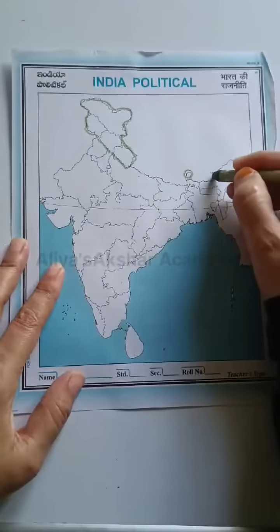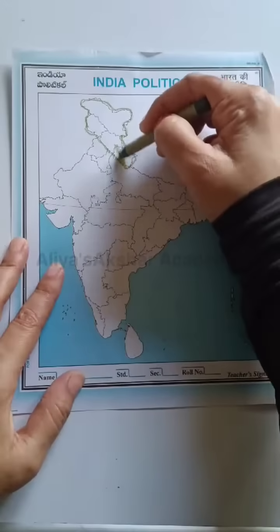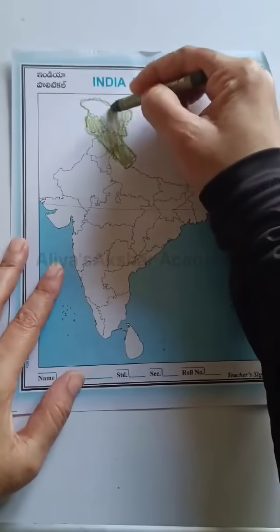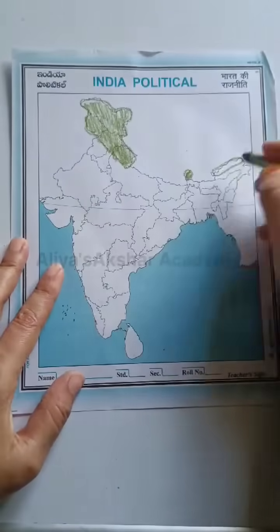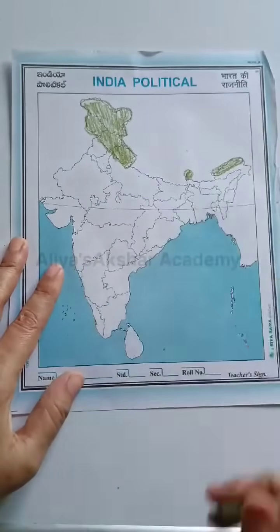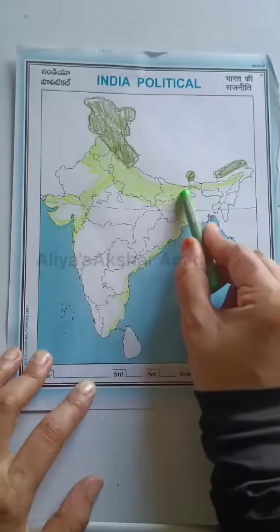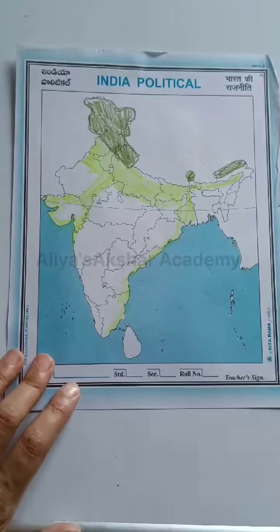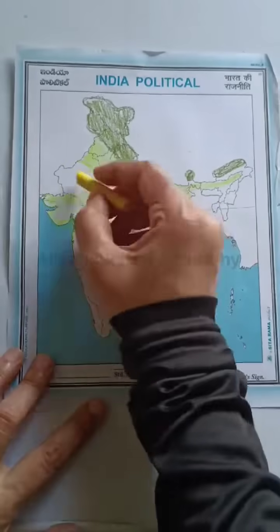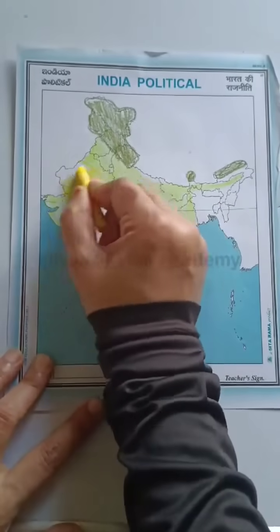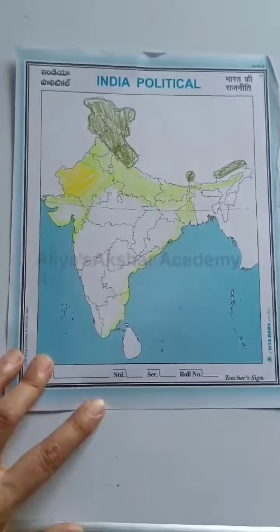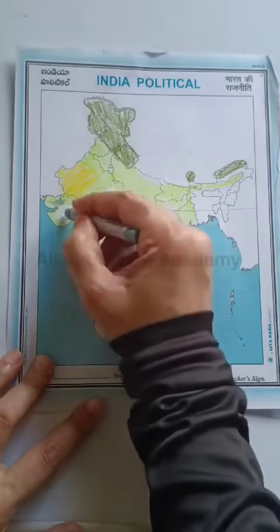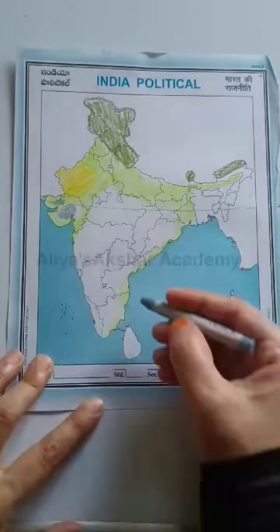Dark green color can be used to indicate forest and mountain soil, which is found in the extreme north, Sikkim and Arunachal Pradesh. Light green color indicates alluvial soil, which extends majorly in the northern plains, some parts of Rajasthan, Gujarat, Assam and eastern coastal plains.